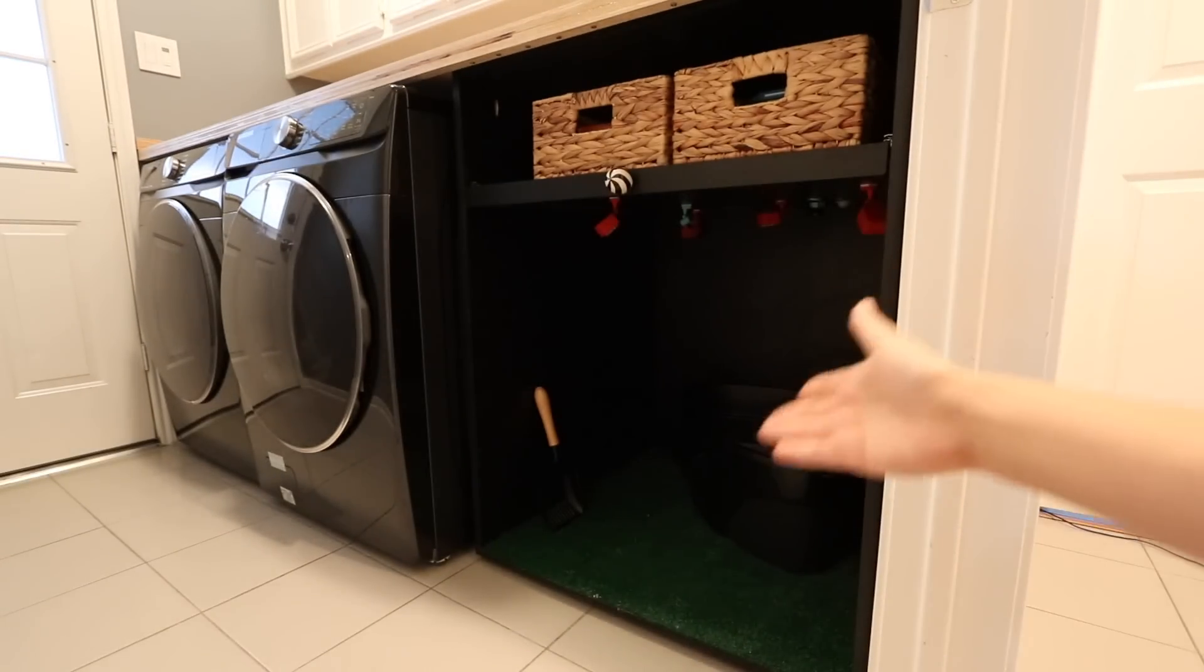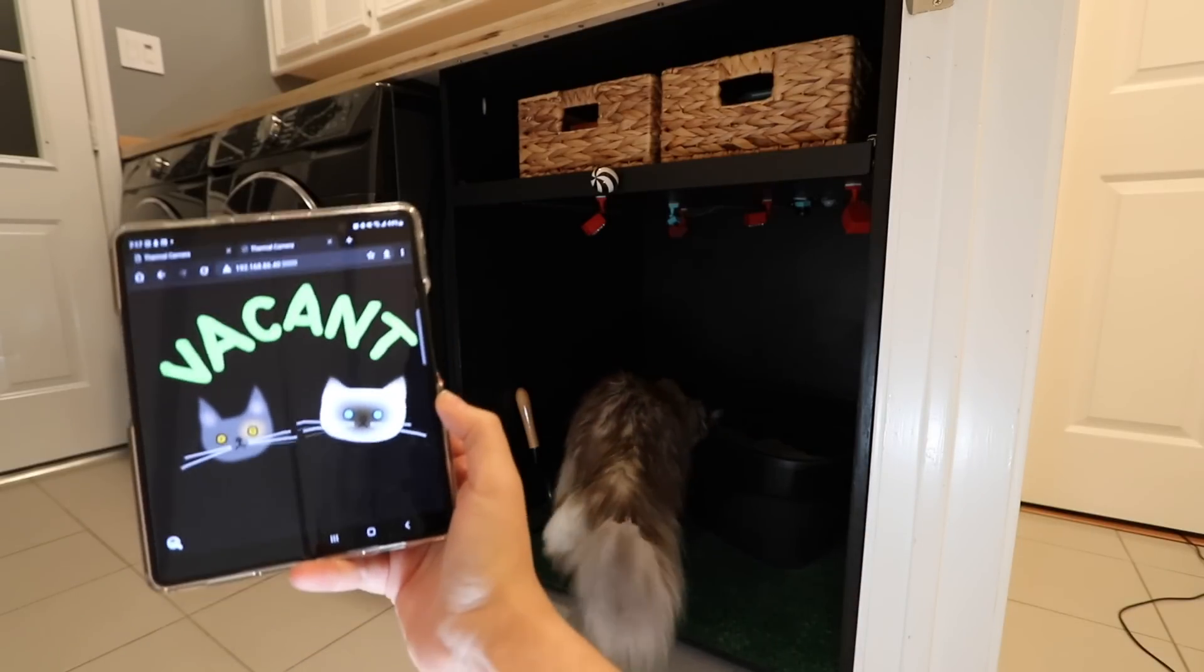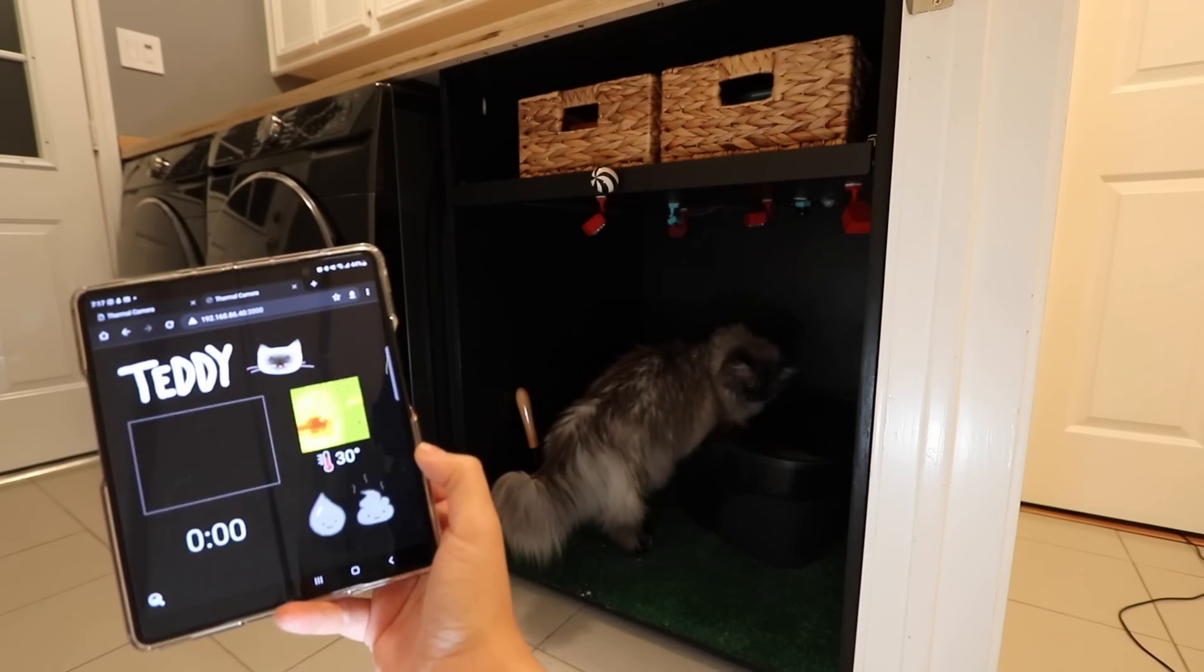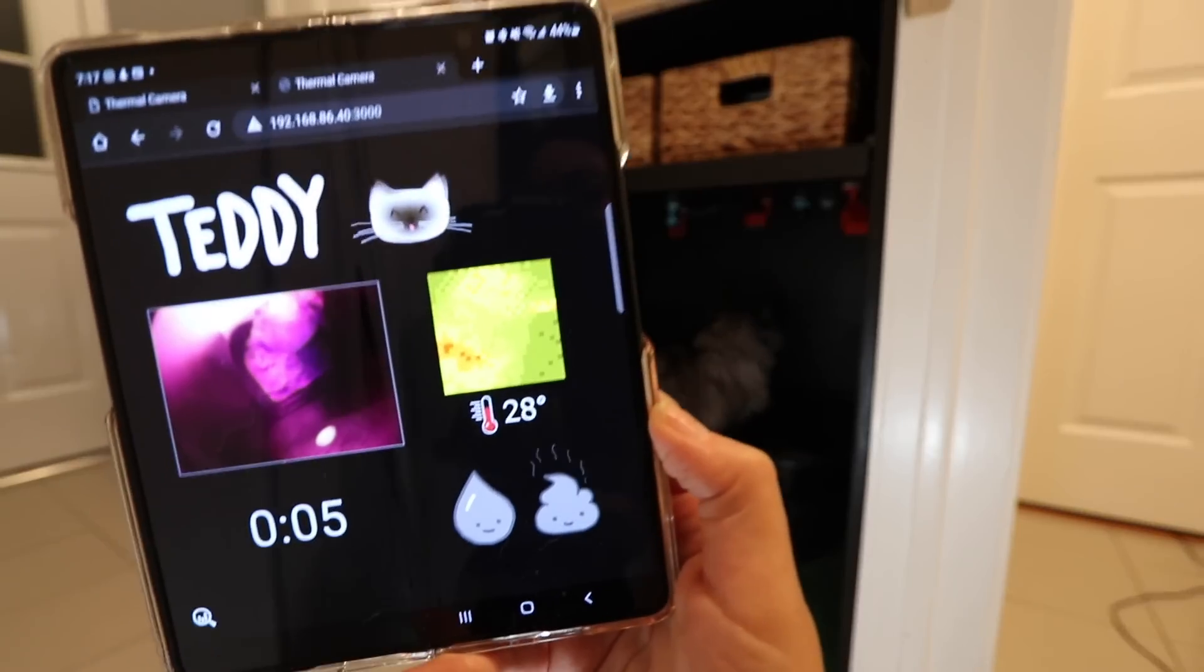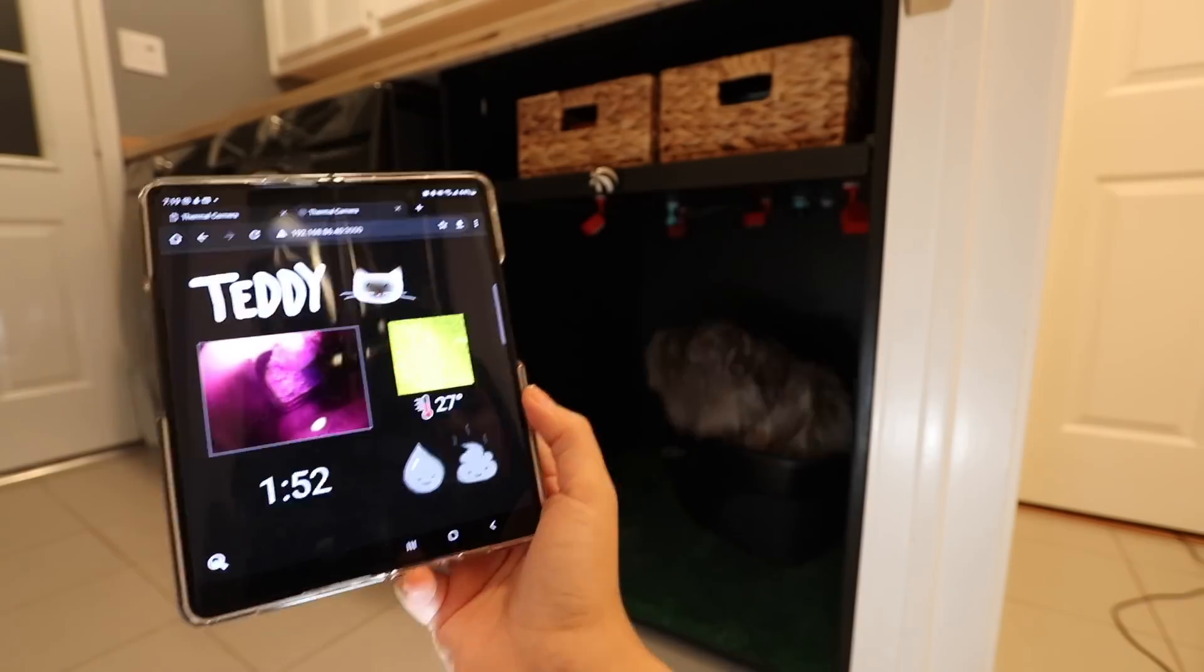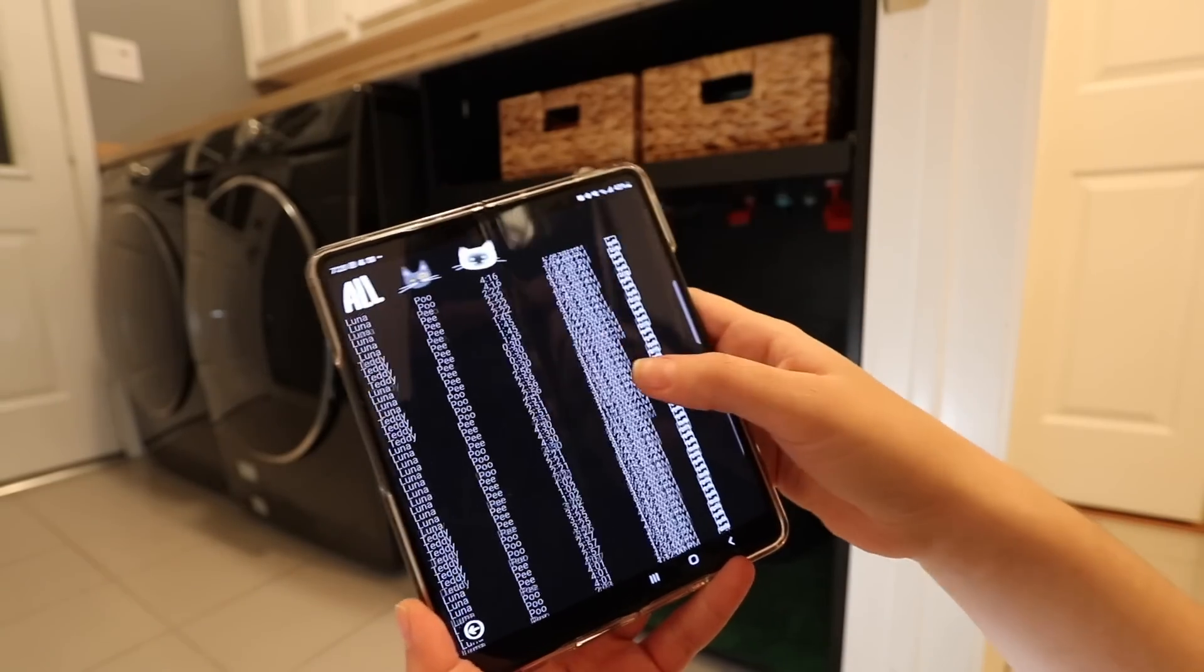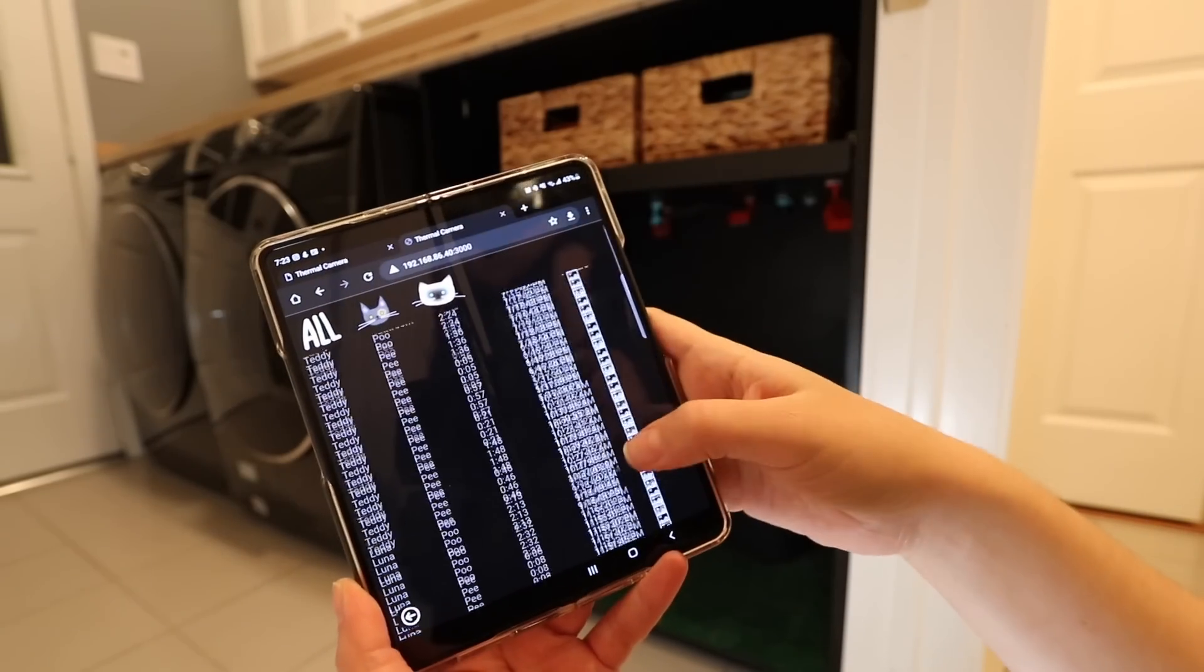And this is what it looks like. It shows a vacant sign with the litter box empty. And when a cat walks in, it takes a picture, it is processed by the prediction algorithm, tells me which cat is using the bathroom, and shows all the stats, temperature, live feed. And when they're done, it tells me what they did, which in this case was poop. And I saved all the data, so now I definitely know when Teddy Bear is not pooping and needs to go to the hospital.